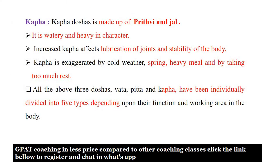Kapha Dosha is made of Prudhvi and Jal — it has a water-like, heavy character. Increased Kapha affects lubrication of joints and stability of the body. Kapha Dosha is triggered by cold weather, spring season, heavy meals, and taking too much rest. For example, if you take too much rest, you automatically get joint pains. Kapha Dosha is also associated with sputum.